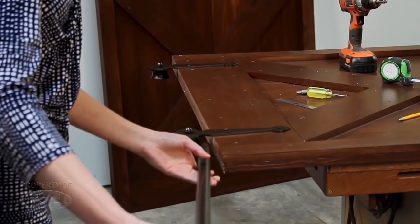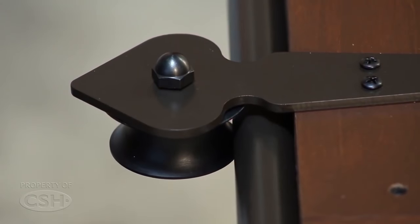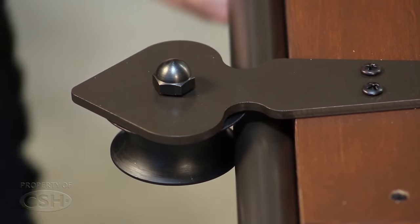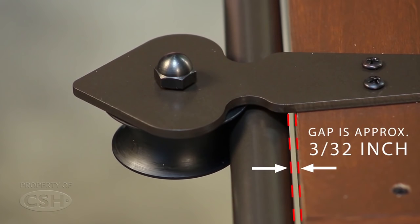Proper location of the roller strap will allow the rail to pass between the roller and the top of the door, with a 3/32 inch gap in between.